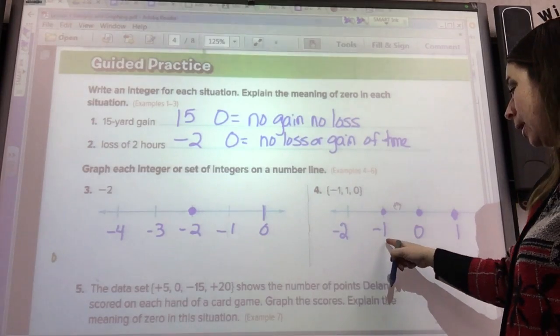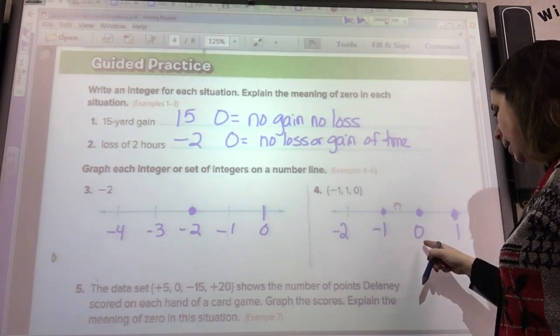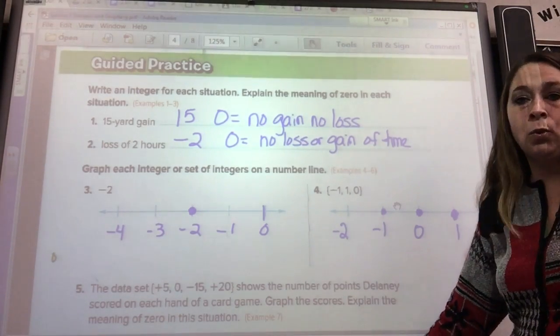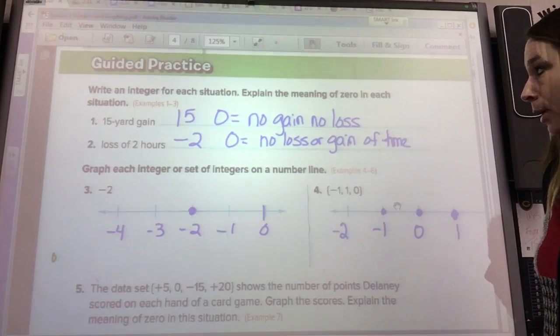Now could I put my zero right here and the negative one and positive one, positive two? Sure. As long as your numbers can fit in there you can put them wherever you want to, if it's blank.